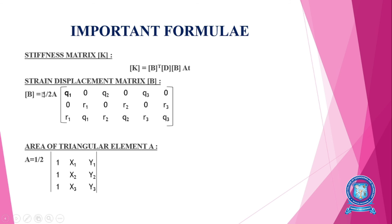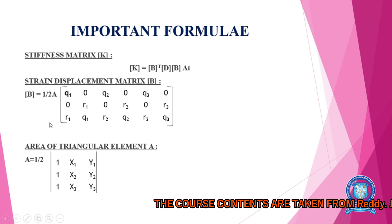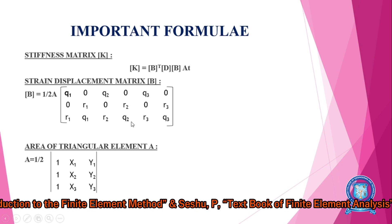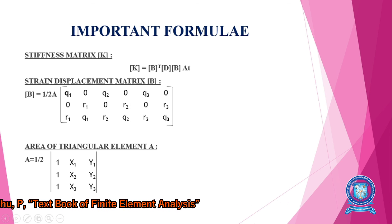The second formula is the strain displacement matrix, the B matrix. B = (1/2A) × [q1, 0, q2, 0, q3, 0; 0, r1, 0, r2, 0, r3; r1, q1, r2, q2, r3, q3]. The transpose B^T = [q1, 0, r1; 0, r1, q1; q2, 0, r2; 0, r2, q2; q3, 0, r3; 0, r3, q3].